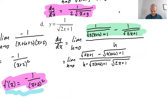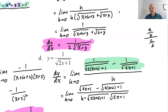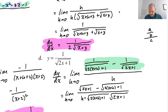And then all of that is over h. I'm going to bring h up into the denominator of this fraction. If you're not sure why, consider a over b divided by c — that's just a over bc. That's essentially what we're doing here. That's why the h ends up in that denominator.